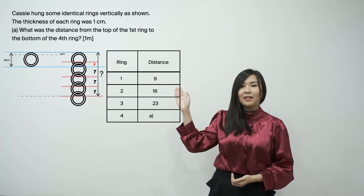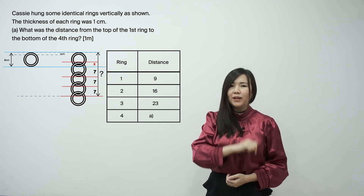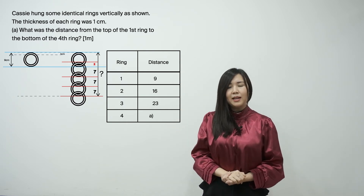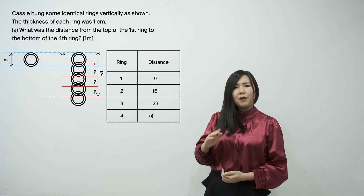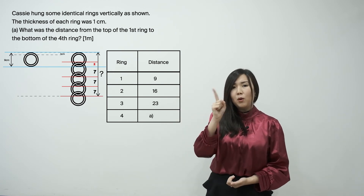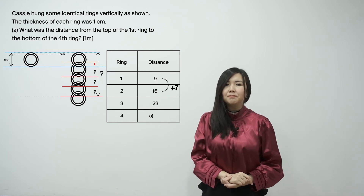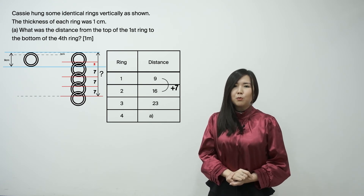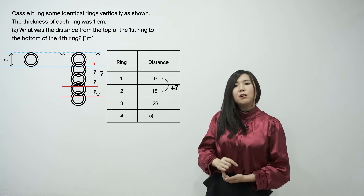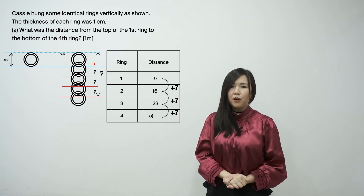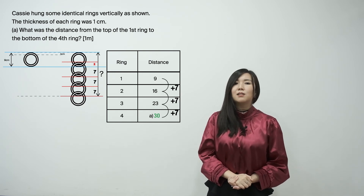This is a 2020 PSLE question. Casey hung some identical rings vertically as shown. The thickness of each ring was 1cm. Part A: What was the distance from the top of the first ring to the bottom of the fourth ring? From the diagram, we can see that the distance from the top to the bottom of the first ring is 9cm. By adding one more ring, the distance increases by 7cm — not 9cm, because we need to subtract the width of the ring as illustrated in the diagram. Continuing to add 7 until the fourth ring, the distance from the first ring to the bottom of the fourth ring is 30cm, which is the answer to part A.